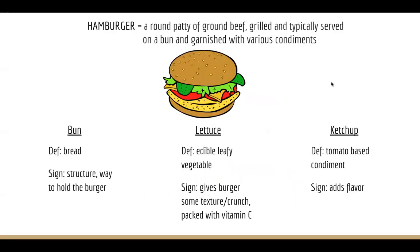The first example I'm going to give you is very simple. Let's say our unit of study is a hamburger. The definition of a hamburger: a round patty of ground beef, grilled and typically served on a bun and garnished with various condiments. So if hamburger was our unit, maybe the terms we'd give you are: bun, lettuce, and ketchup. For a bun, the definition is simple — it's bread. But in relation to a hamburger, why is that bun significant? It gives the hamburger structure. It's a way to hold the burger, stay neat, and not get your hands greasy.